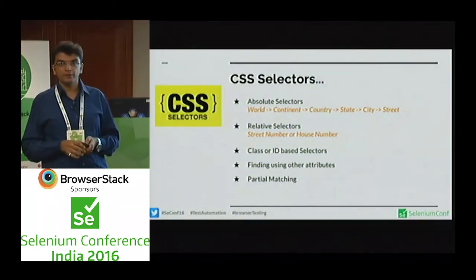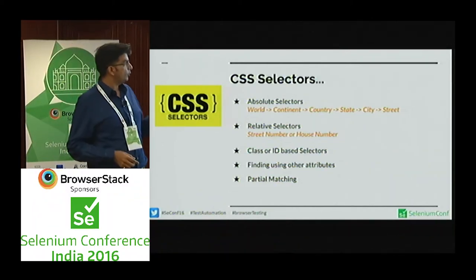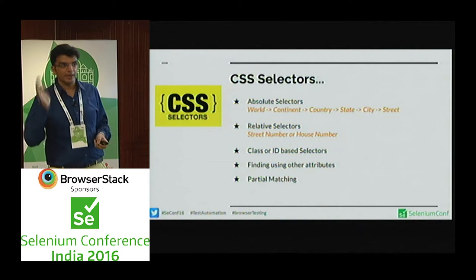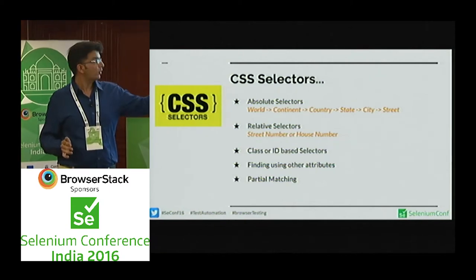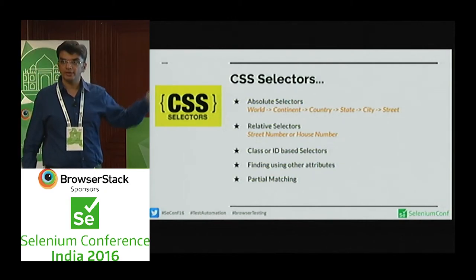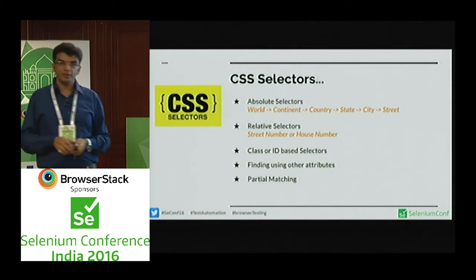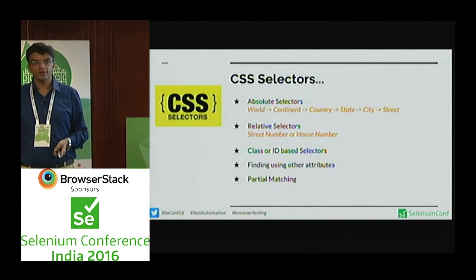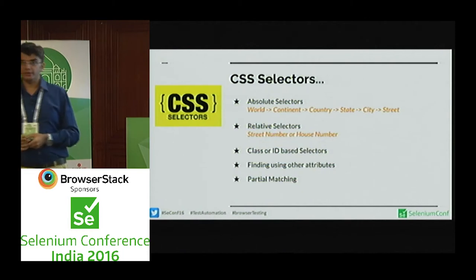CSS selectors follow these basic patterns. For absolute selectors, consider this analogy: world → continent → country → state → city → street. Relating this to an HTML page source: world is HTML, continent is your body, and then come your divs, spans, input elements, select boxes, and so on. That is how absolute selectors are written — the full hierarchy from the root.